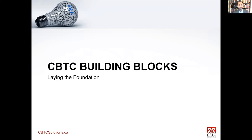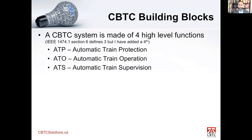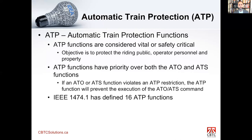CBTC building blocks. There are three high-level functions that define a CBTC system: ATP — automatic train protection; ATO — automatic train operation; and ATS — automatic train supervision. These three building blocks are what define a CBTC system itself.